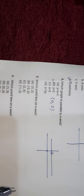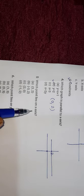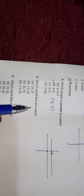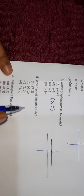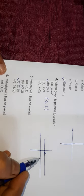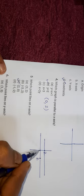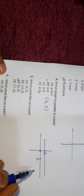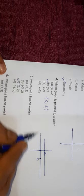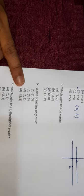Question number five: which point lies on the x-axis? The answer is (2, 0). The point (2, 0) — 2 is on the x-axis and 0 is the y-value — so this point lies on the x-axis.